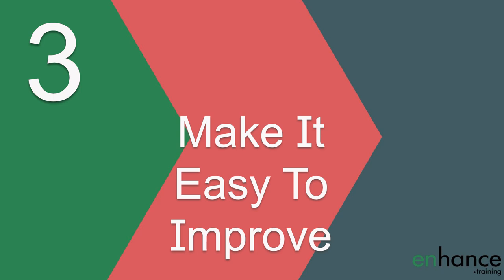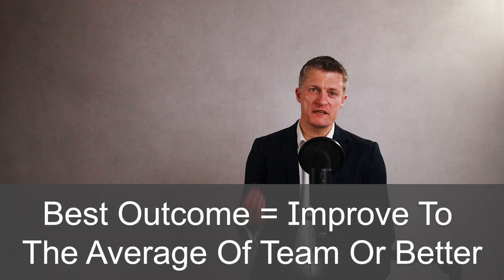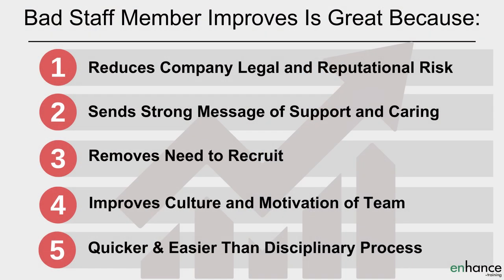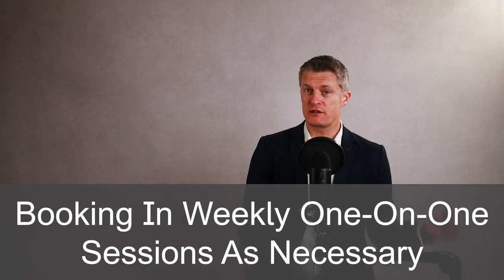Third, when taking action, make it easy for the bad staff member to improve. The best outcome is for the bad staff member to improve to at least the average standard of your team. This outcome reduces company legal or reputational risk, sends a strong positive message of support and care to team members, removes the need to recruit a new staff member — which is expensive in time, money, and lost output — improves team culture and motivation, and is quicker and easier than a protracted disciplinary process. For these reasons, I view booking in weekly coaching and mentoring sessions with a bad employee as a necessary use of time, which the majority of the time leads to improvement in the performance, behaviour, and attitude of the person.